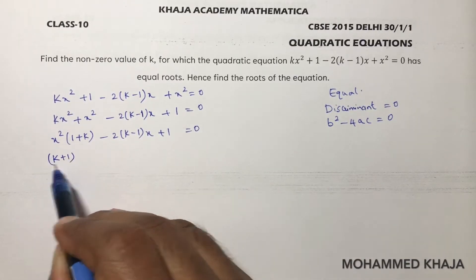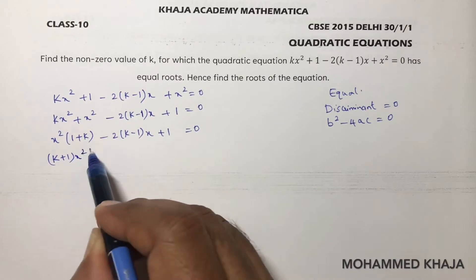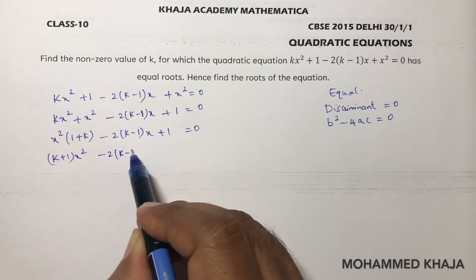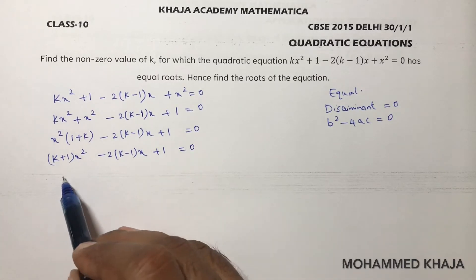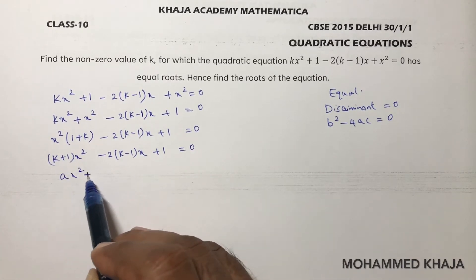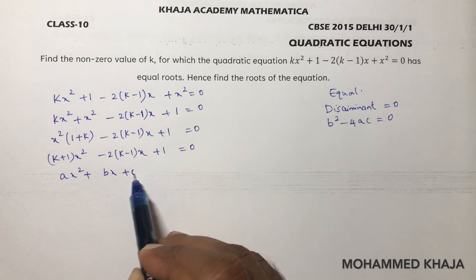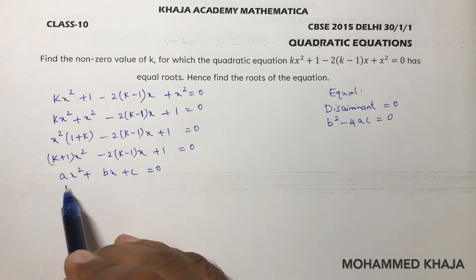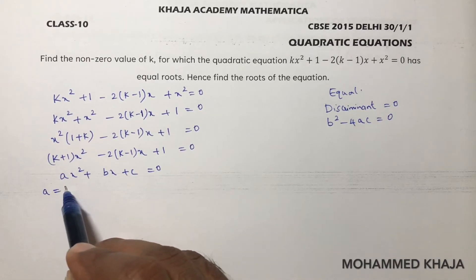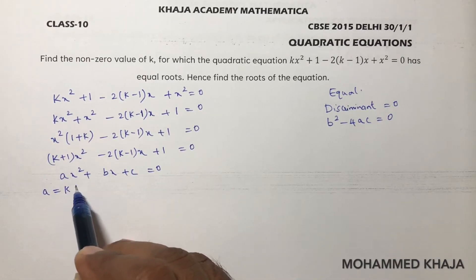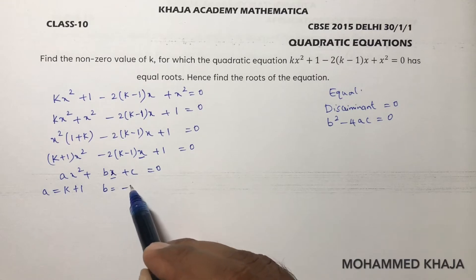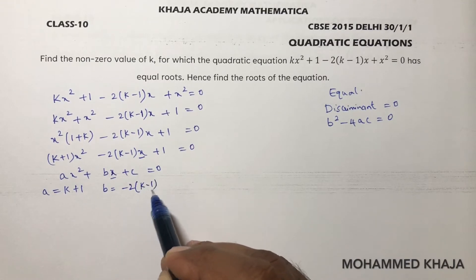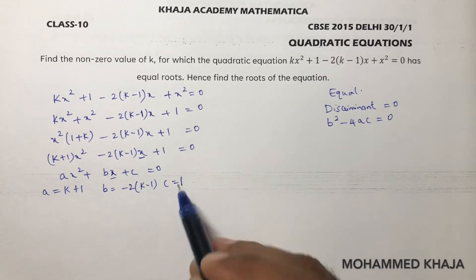Now we have (k+1)x² - 2(k-1)x + 1 = 0, which is in standard form ax² + bx + c = 0. Comparing, the value of a is (k+1), b is the coefficient of x which is -2(k-1), and c is 1.